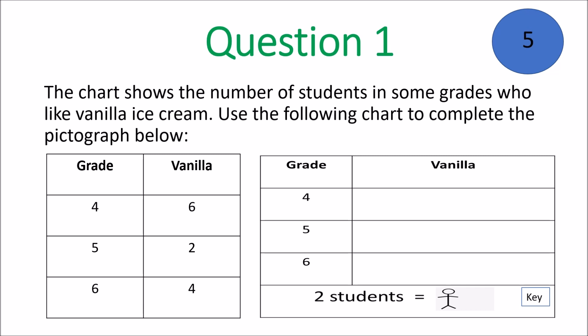You have grades 4, 5, 6 and then the students who like vanilla: 6, 2, 4. Look on the pictograph and look at the key. Change those numbers into pictures — that's why it's called a pictograph.